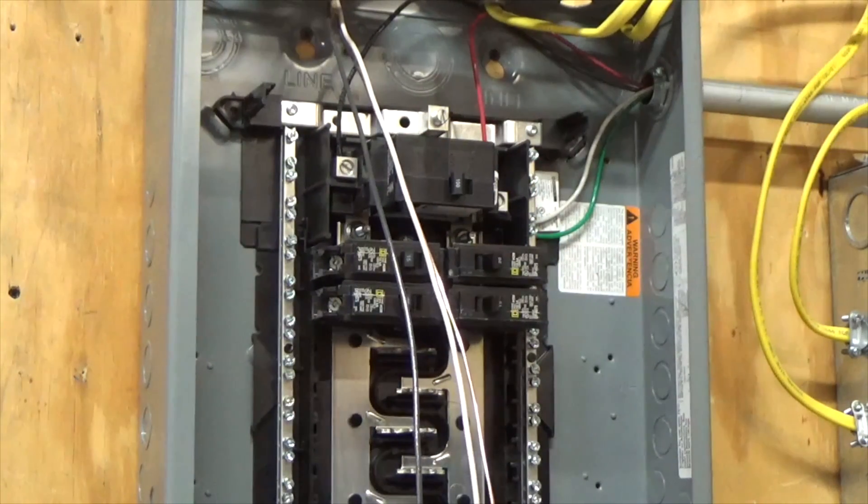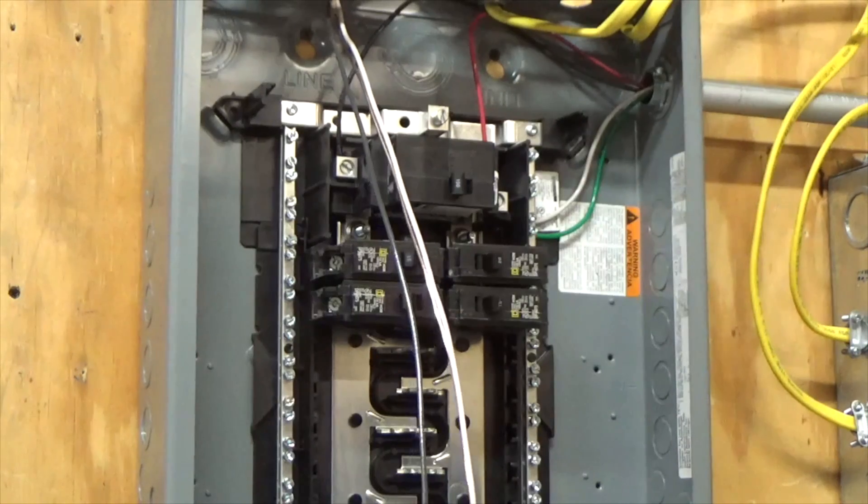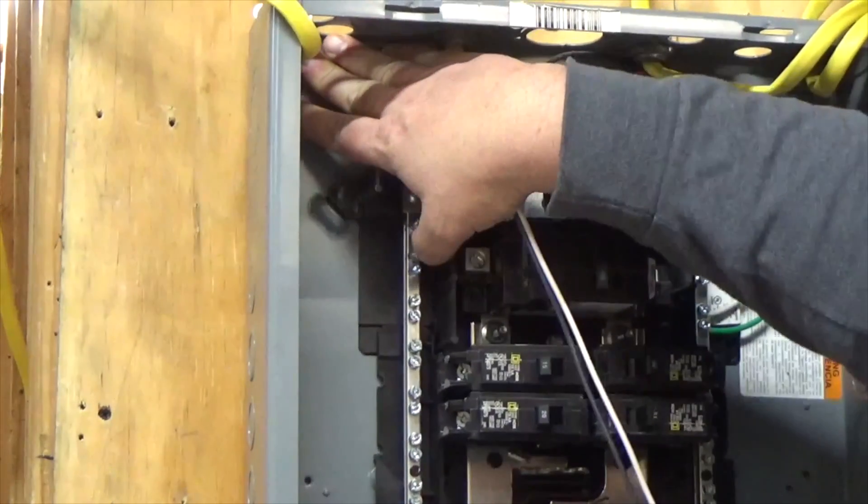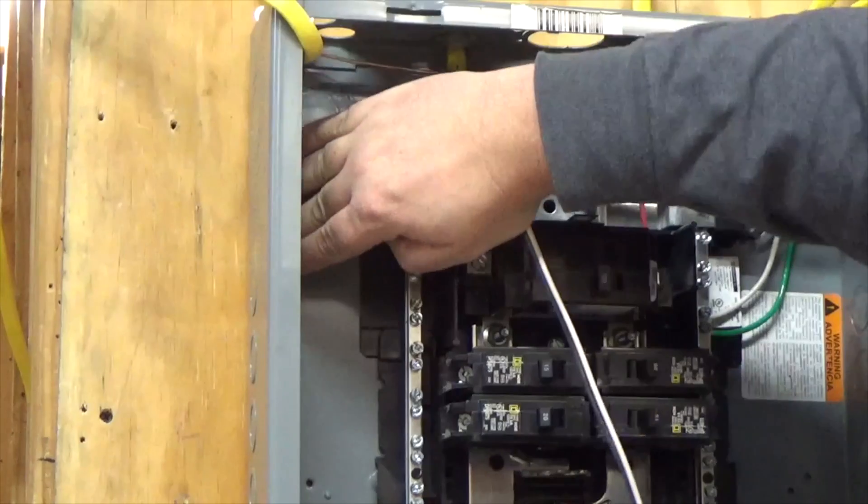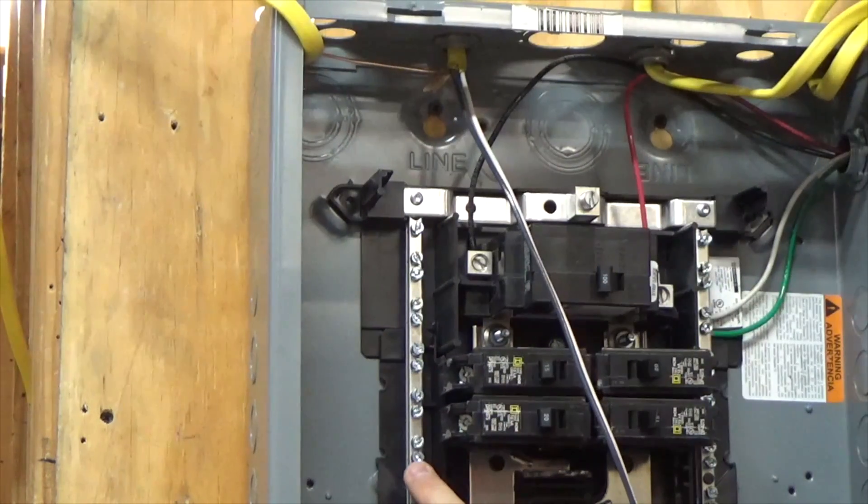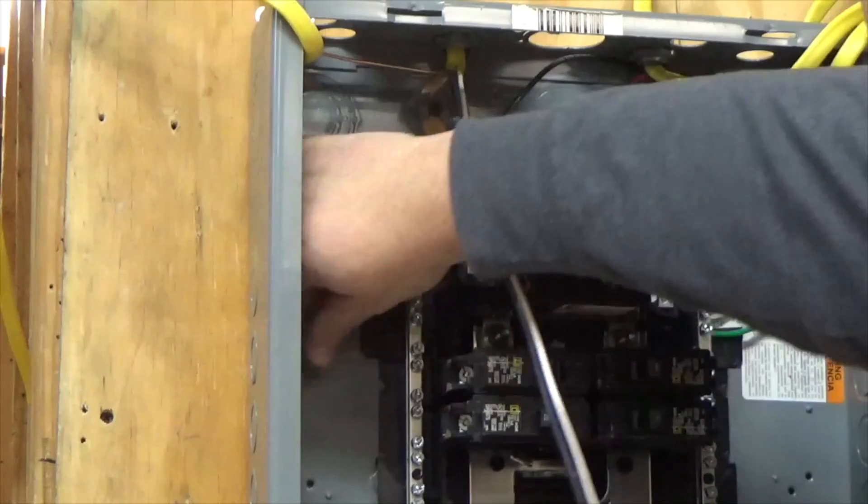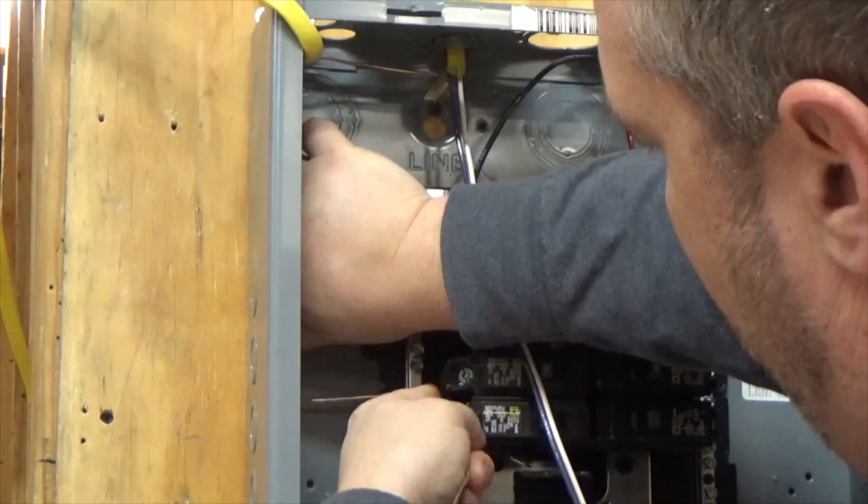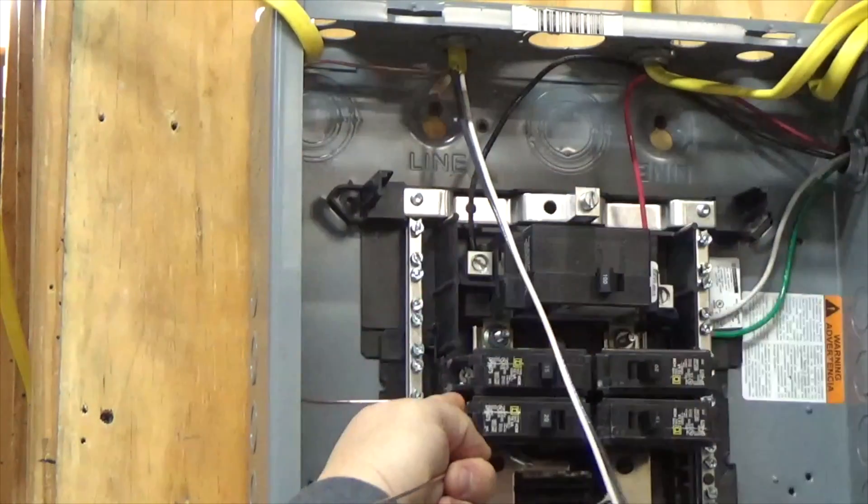What I'm going to do first is I'm going to land my ground. I'm going to tuck my ground wire out. I'm going to come down - because I'm using this breaker here I'm going to use these two screws here. I'm going to put my thumb on it, bend the wire, and then cut it off.